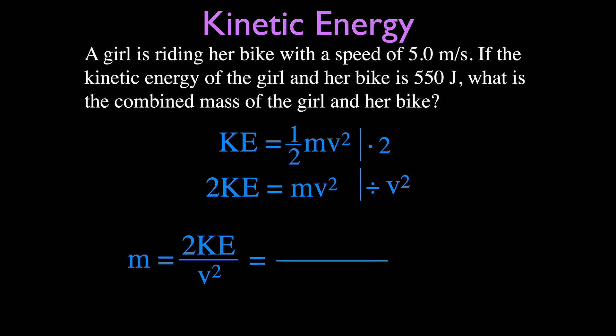When we divide by velocity squared, we get that the mass is equal to 2KE divided by the velocity squared. We're given the KE. It's 2 times 550 and the velocity squared. Remember, once again, you've got to square the velocity. This is 5 times 5 is 25. So, this is 1,100 divided by 25 and you get that the girl and her bike have a mass of 44 kilograms, just like that.